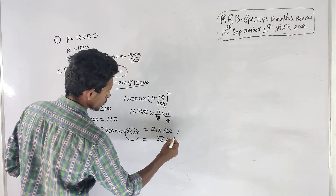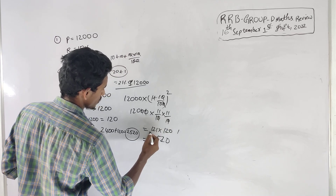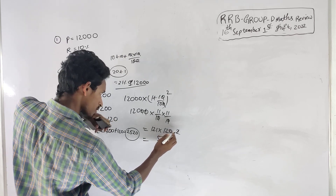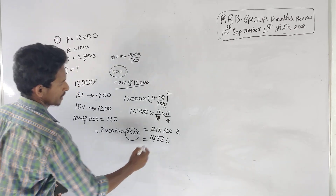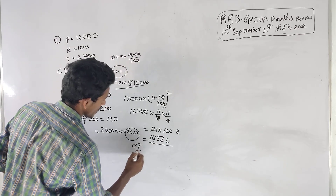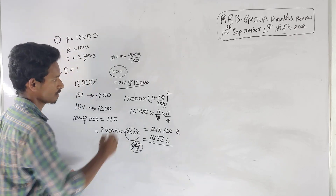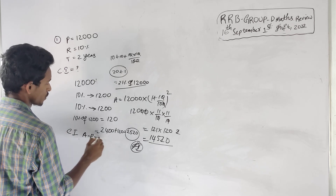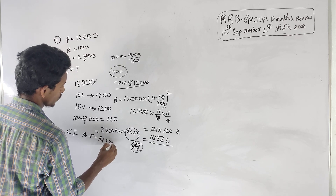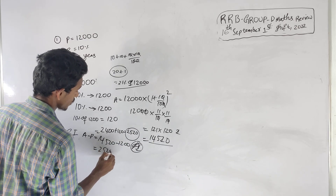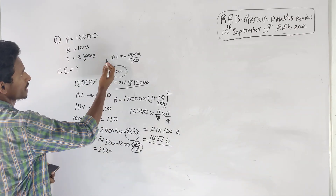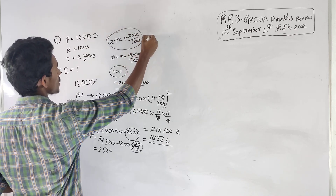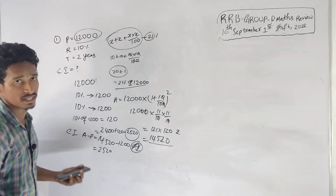Calculating 12,000 into 121 by 100 gives 14,520. This is the compound amount. The compound interest is the amount minus principal. Using the shortcut, 21% of 12,000 gives the compound interest directly.